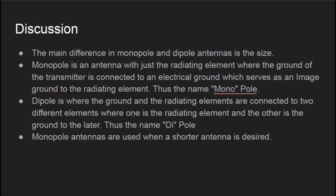You may have noticed that the monopole and dipole antennas are very similar, which they are. The main difference, though, is the size. The monopole is typically half the size of the dipole, so when a smaller antenna is needed, we look for a monopole antenna. The monopole is an antenna with just the radiating element, where the ground of the transmitter is connected to the electrical ground, which serves as an image ground to the radiating element — thus the name monopole.